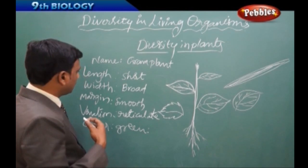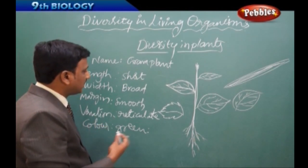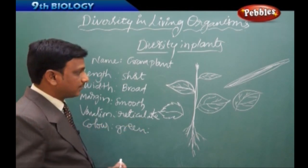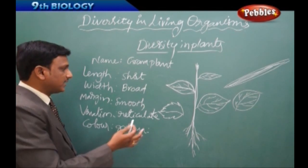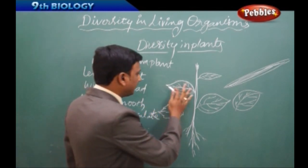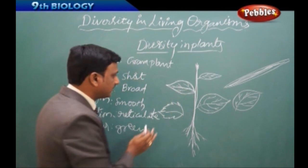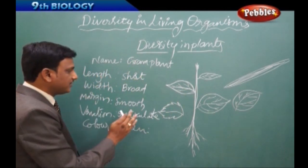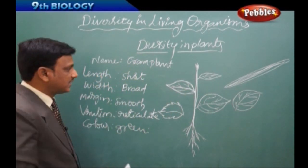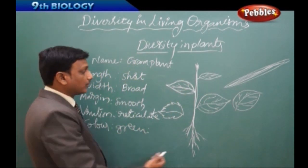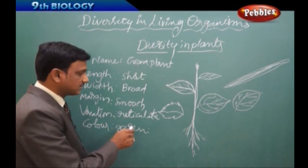So the color is green, margins are smooth, venation is reticulate, and the leaves are short and broad — these are the outline features of the leaves of the gram plant. In this way, different features and characteristics of leaves are listed. We can take one more plant and list their features in the same way.